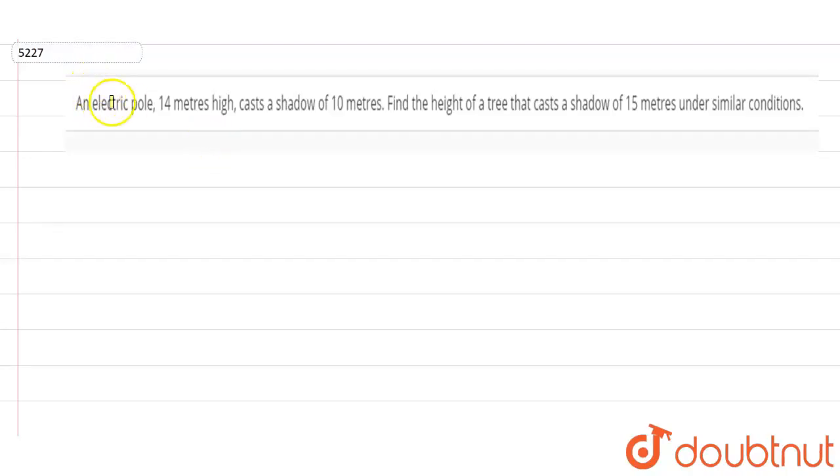Hello student, the question is: an electric pole 14 meters high casts a shadow of 10 meters. Find the height of a tree that casts a shadow of 15 meters under similar conditions.